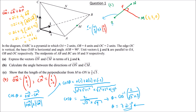We use the fact that FM is perpendicular to ON. The direction vector of ON is (0, 2, 1). We find vector FM = OM − OF = (1, 2, 0) − (0, 2λ, λ) = (1, 2−2λ, −λ).